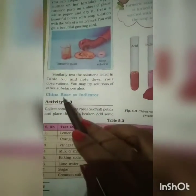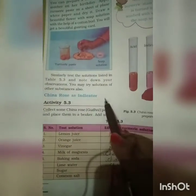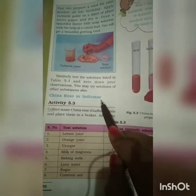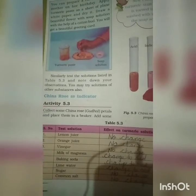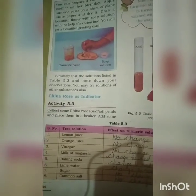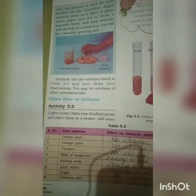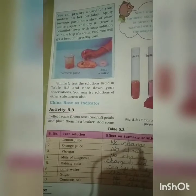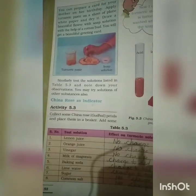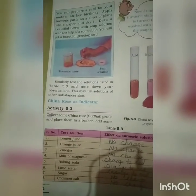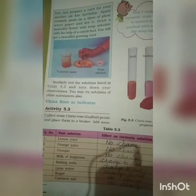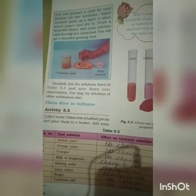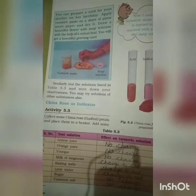Our next natural indicator is the China Rose indicator. To prepare the China Rose indicator, we collect some China Rose petals and place them in a beaker. Add some warm water and keep the mixture for some time. Then the water becomes colored, and we use this colored water as an indicator.